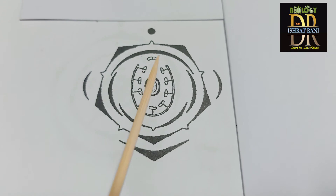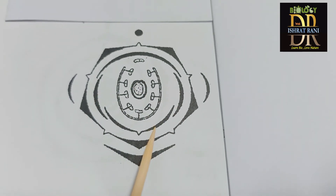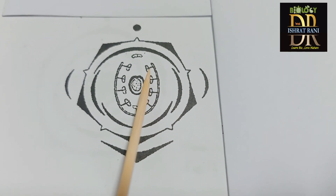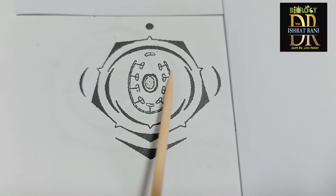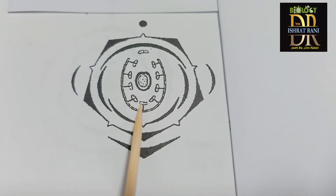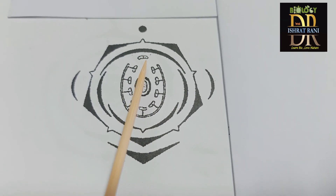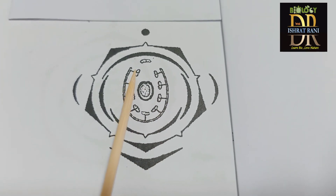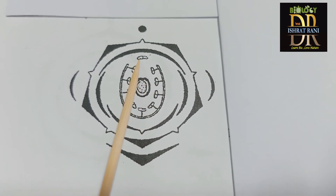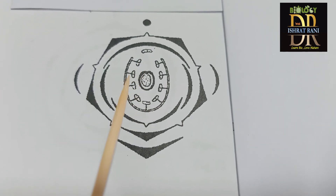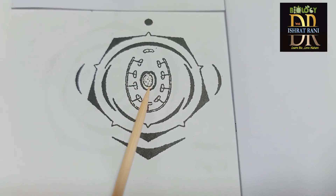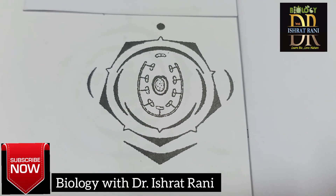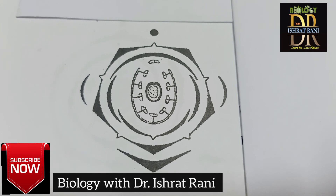This is the standard or vexillum, these are the wings, and this is the boat-shaped keel or carina. Then in the androecium: nine stamens are fused and one is free — represented as (9)+1. There is a single carpel — this is monocarpellary. This is the floral diagram of Clitoria ternatea or butterfly pea.